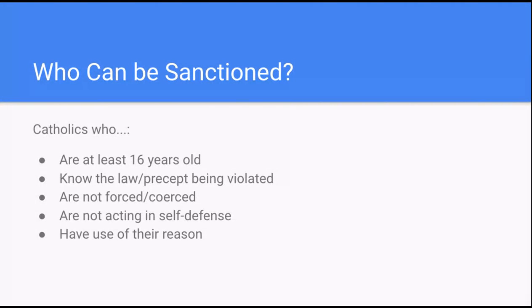In addition to that, the Catholic who is sanctioned must be 16 years old. Not only that they are sinning, but that they are violating a law that has a penalty attached to it. They also cannot be forced or coerced. They cannot be acting in self-defense — a couple of the laws deal with attacking a bishop or a pope.